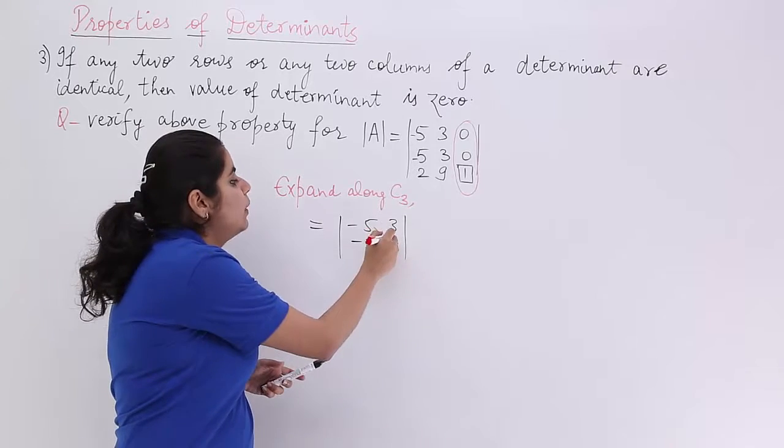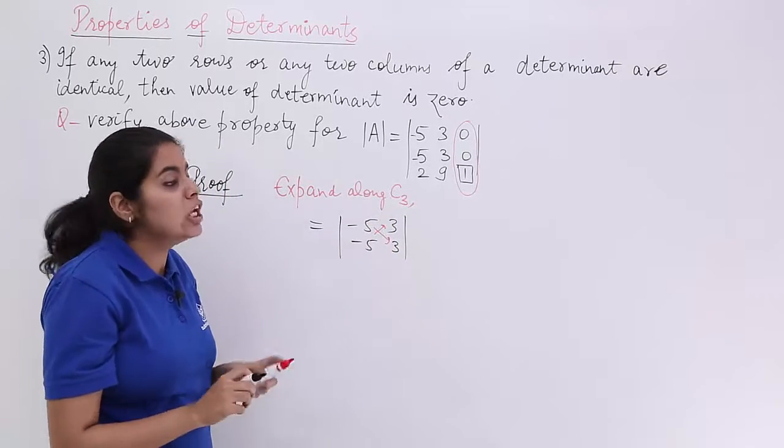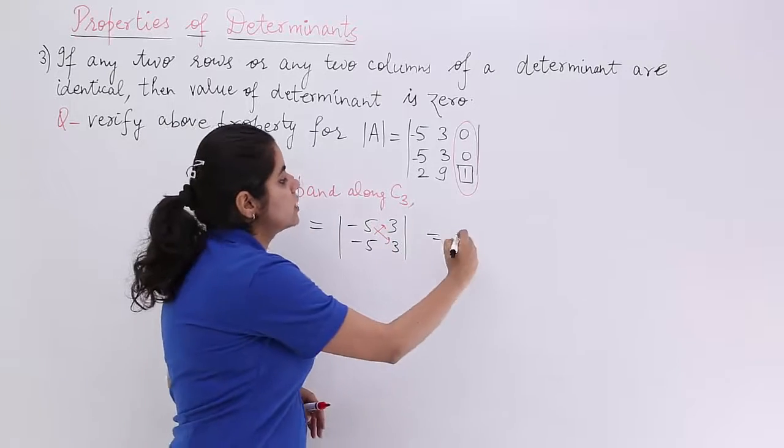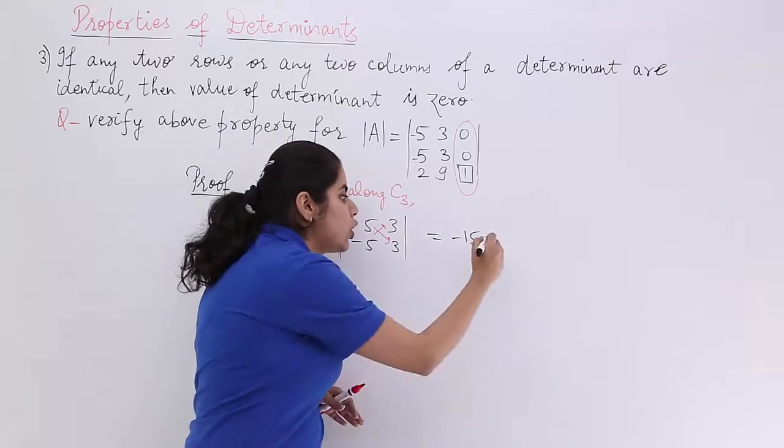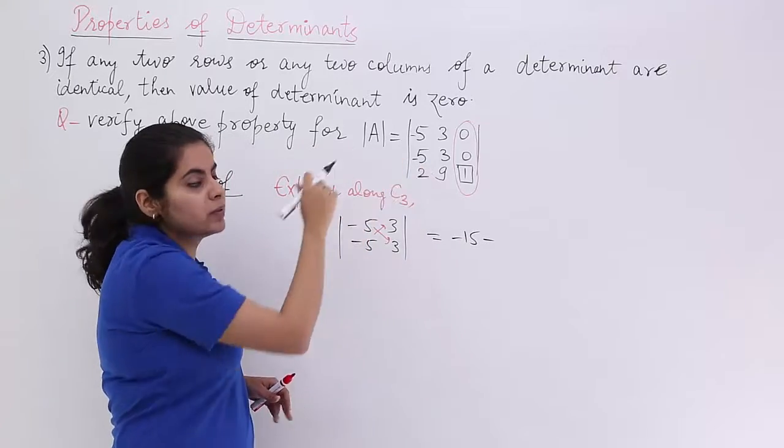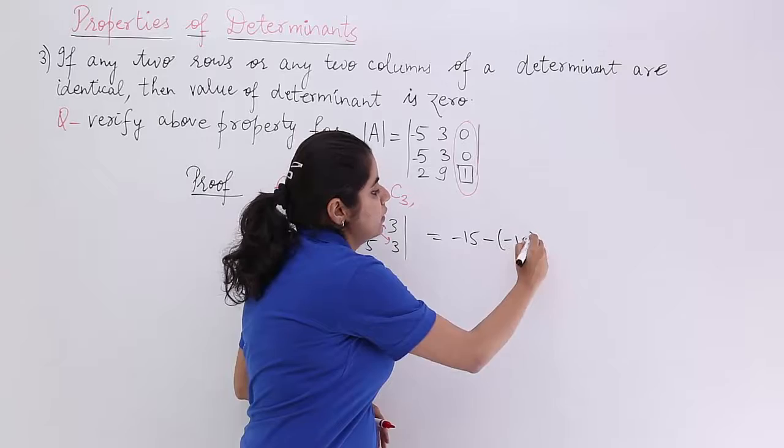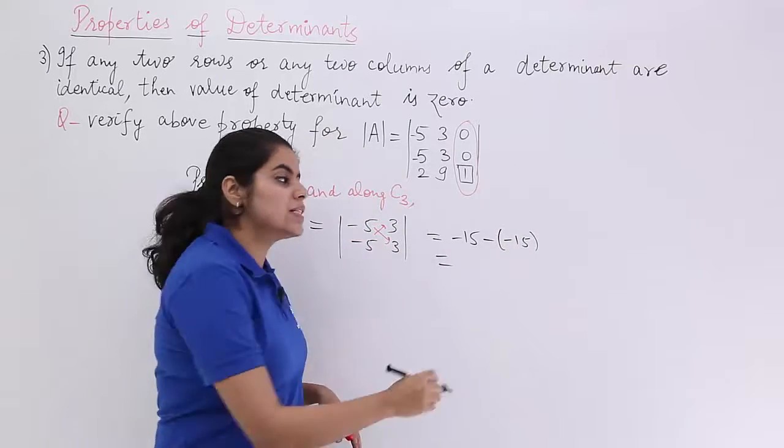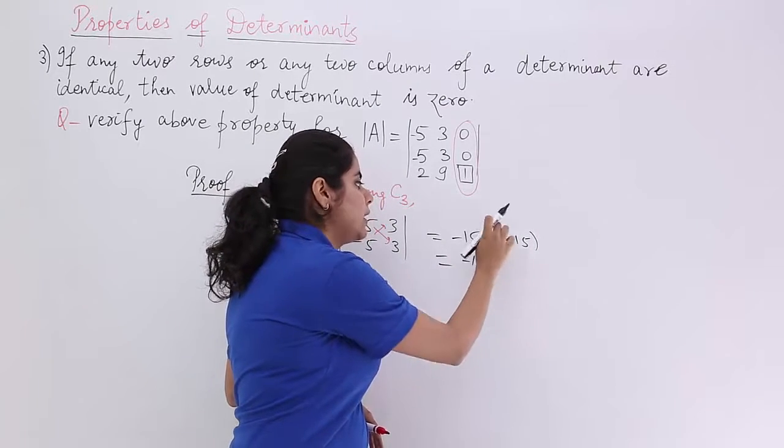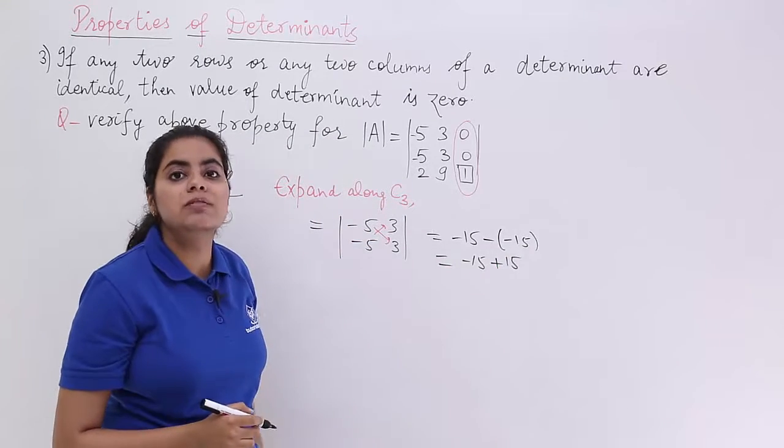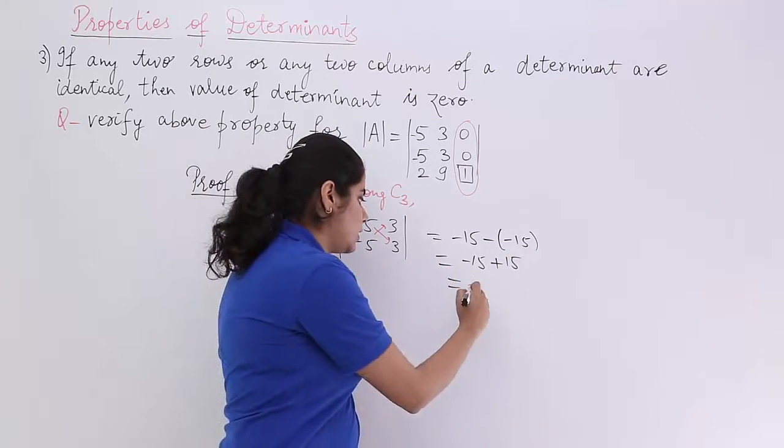Now what to do to evaluate it? Just cross multiply. Cross multiplying gives me what? It is -5 into 3 which is -15. Then minus because we are going from down to up. And it is -5 into 3 which is again -15. Now what is -15? Here minus minus becomes plus here. So it is +15. -15 plus 15 is what? It is nothing but 0.